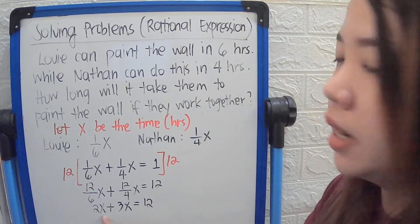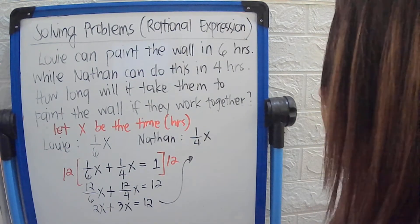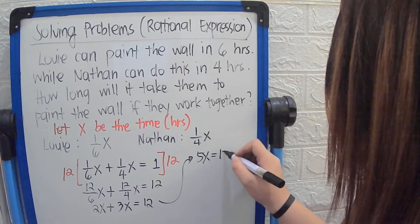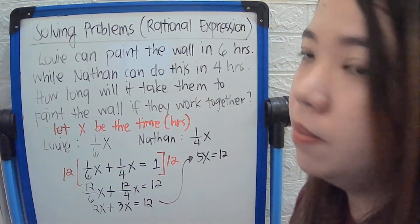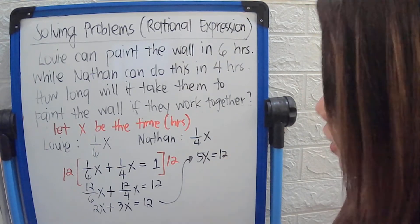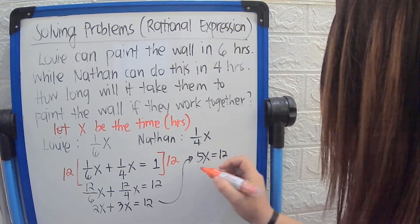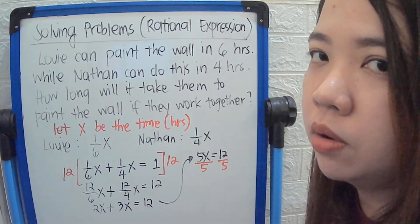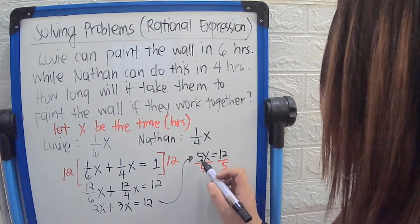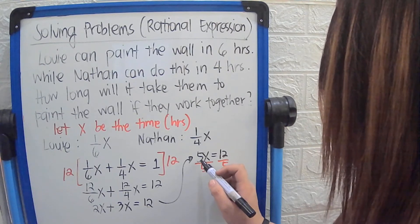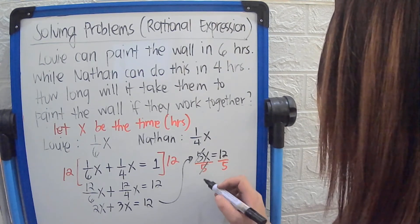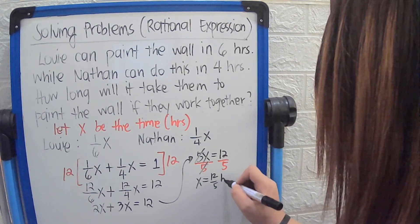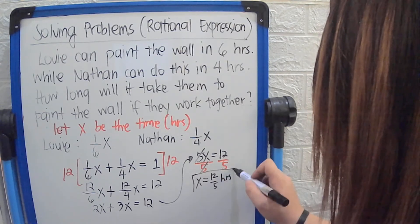Since 2x and 3x are like terms, we can add them. So 2 plus 3 is 5, giving us 5x equals 12. Since our target is time, which is x, we divide both sides by 5 — because this is an equation, what you do on one side you must do on the other. Canceling out the 5, we are left with x equals 12 over 5. So 12 over 5 hours is your answer.